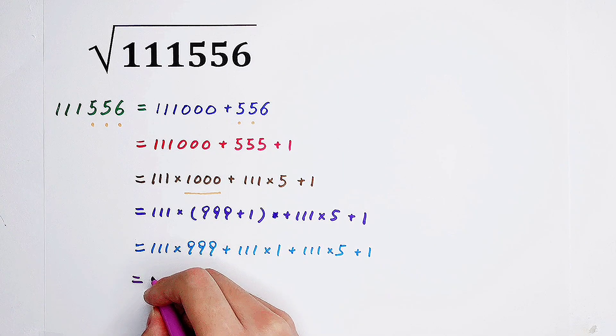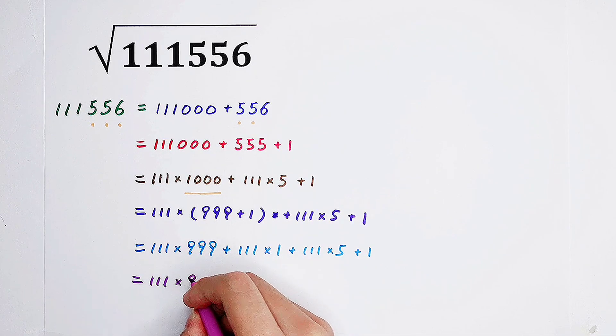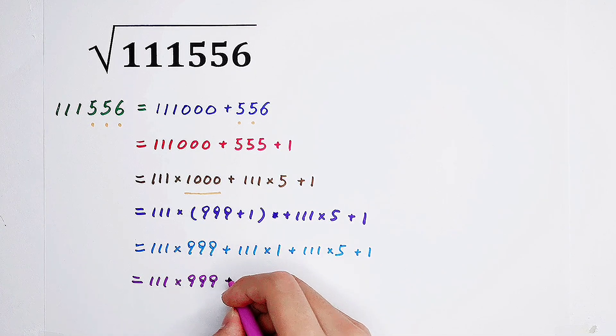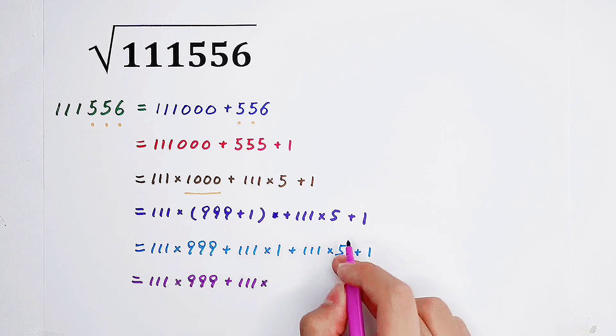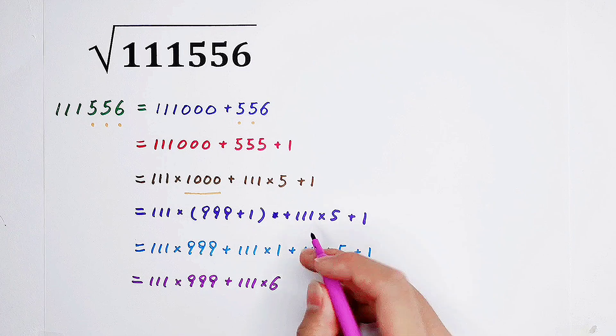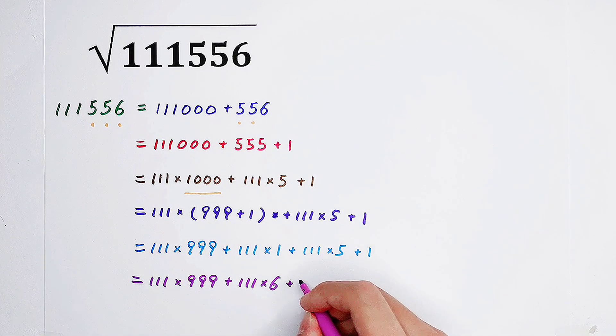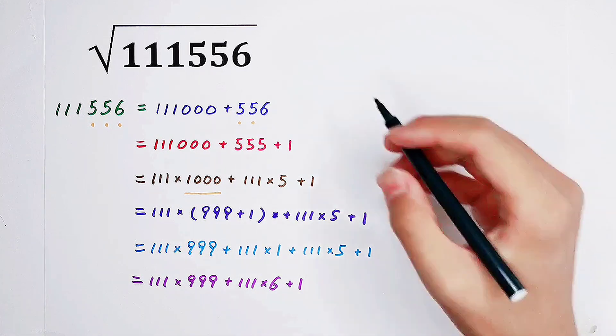What would you do? Here, it is 111 times 1, plus 5 in the bracket, which is equal to 6. So it is 111 times 6, and then plus 1.